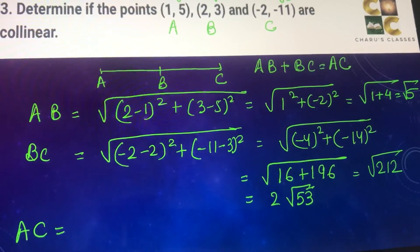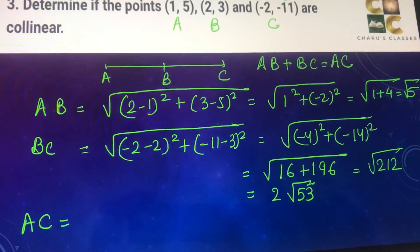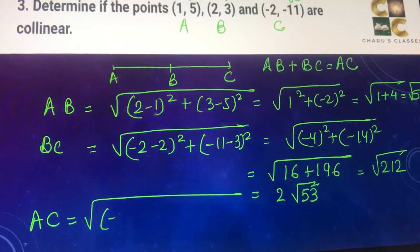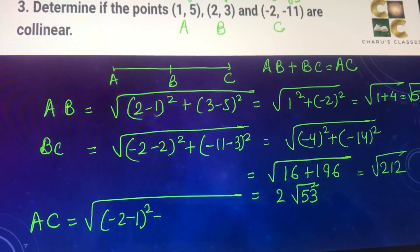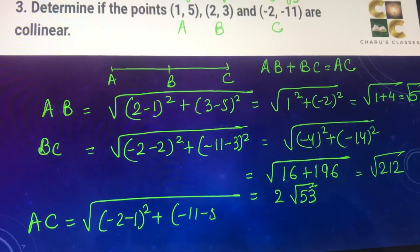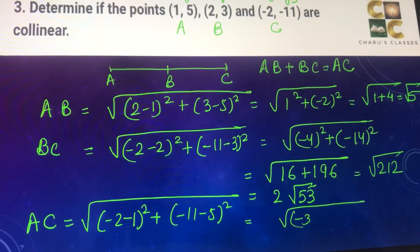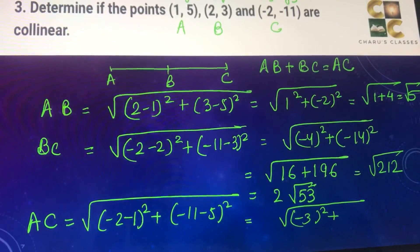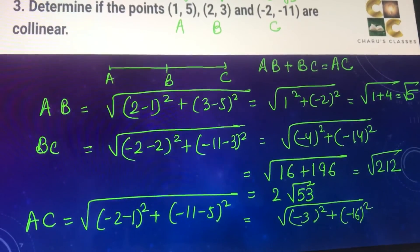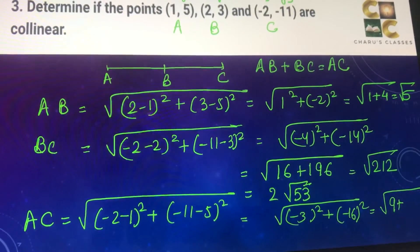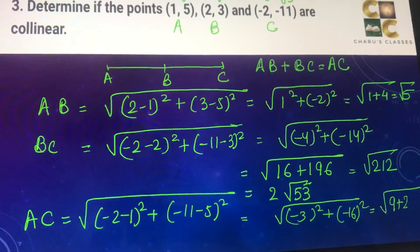Now let's check the value of AC. AC is square root of (-2 - 1)² plus (-11 - 5)², which is square root of (-3)² plus (-16)². (-3)² is 9 and (-16)² is 256. So this is coming as square root of 265.